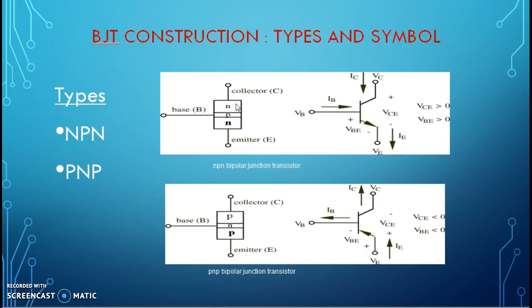Emitter and collector are of same type of doping and base is of opposite type of doping. Here also, emitter and collector are of P type of doping and base is of N type of doping. Thus, there are two types: NPN transistor and PNP transistor. The symbol is as shown, base is shown by the straight line and through which we are showing collector terminal and emitter terminal on both the sides.